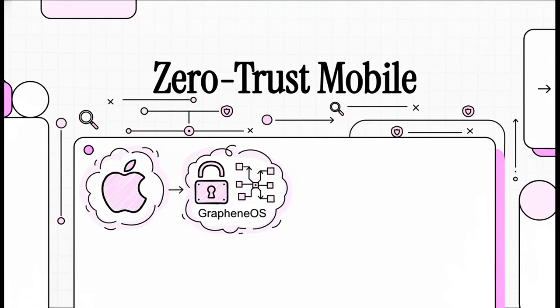Let's get right into it. When we talk about zero trust security on mobile devices, there are really two major philosophies duking it out. On one side, you have Apple's locked-down integrated iOS. On the other, you've got the hardened open-source fortress that is GrapheneOS.